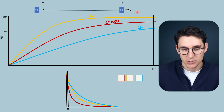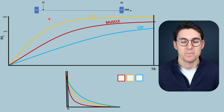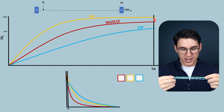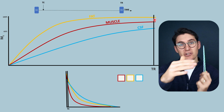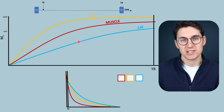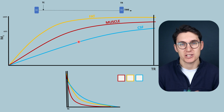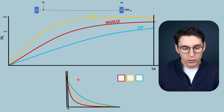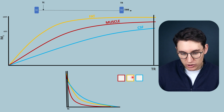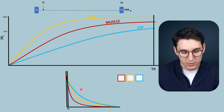With a long TR and short TE we have high signal but have negated both T1 and T2 differences. To create a T1 weighted image — where contrast is predominantly from T1 relaxation differences — we need to keep TE short so we don't allow T2 differences to occur, and we reduce the TR time to highlight T1 differences between tissues.